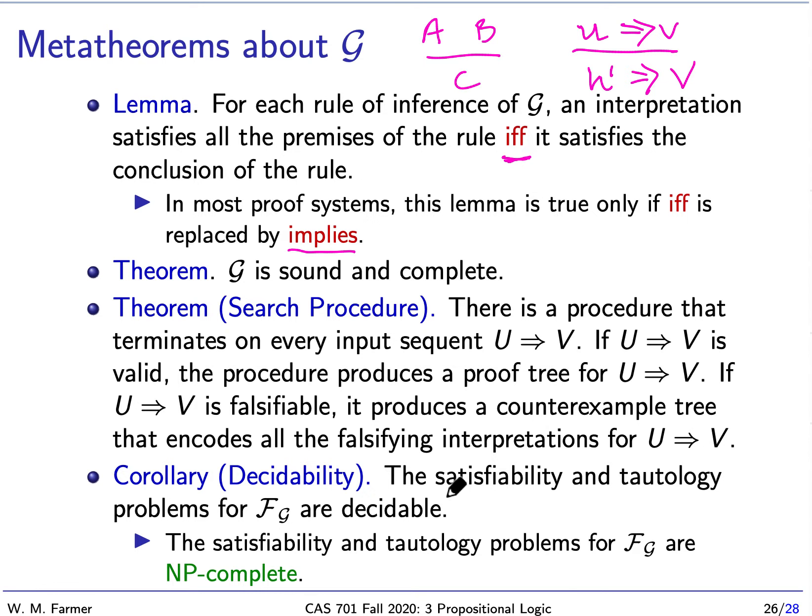As a corollary, we know that satisfiability and tautology problems for this set of formulas, they're both going to be decidable. We already know this from truth tables. We already know this from semantic tableau. We know it from this search procedure. The interesting thing is that the satisfiability and tautology problems for this set are NP-complete. That means that they're relatively inefficient.